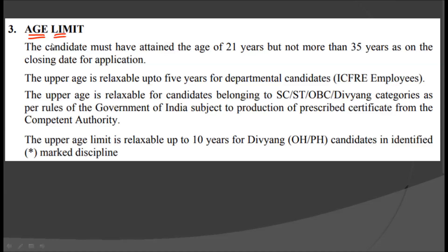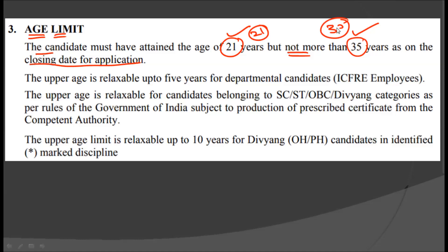The age limit for this post is that the candidate must have attained the age of 21 years but not more than 35 years as on the closing date of the application. That is, the minimum age for this Scientist B post is 21 years and it should not exceed 35 years of age. If you belong to the SC, ST, or OBC category, you should check out the notification for the age relaxation.